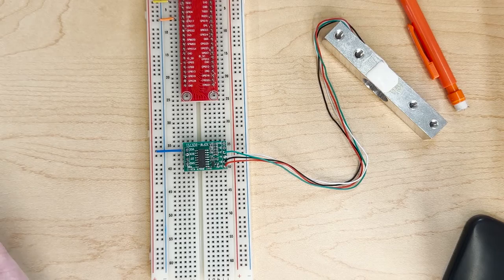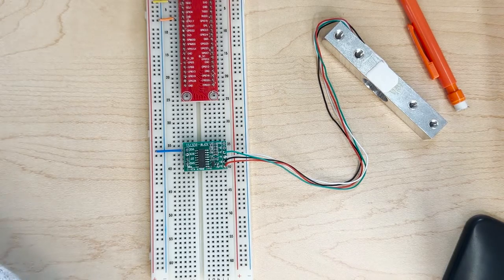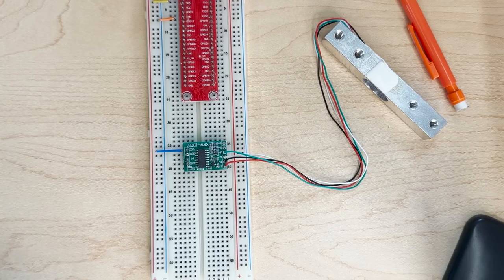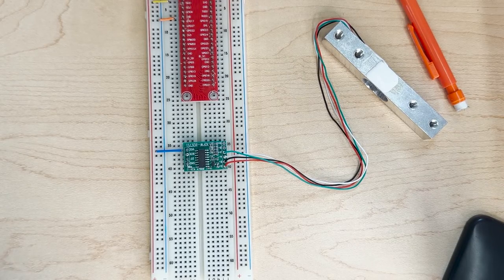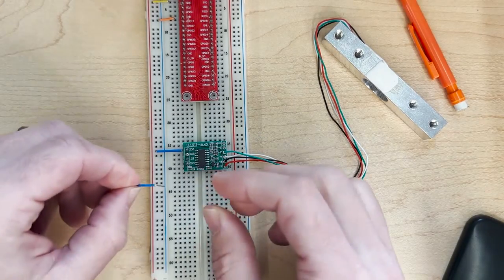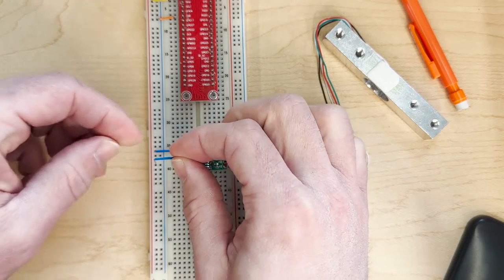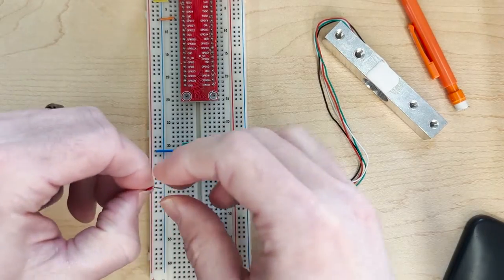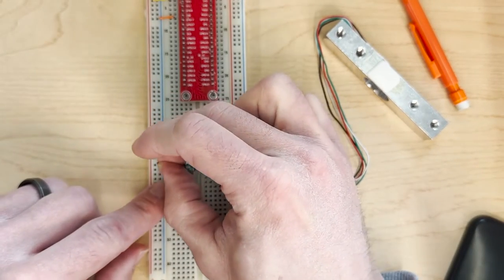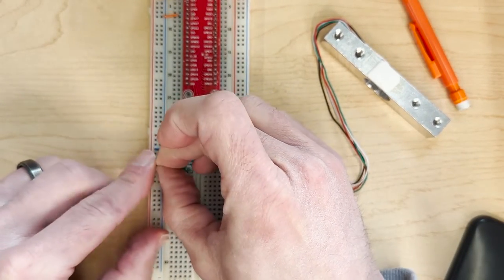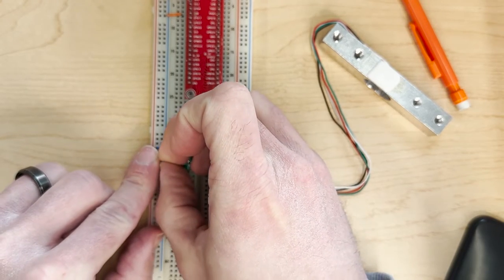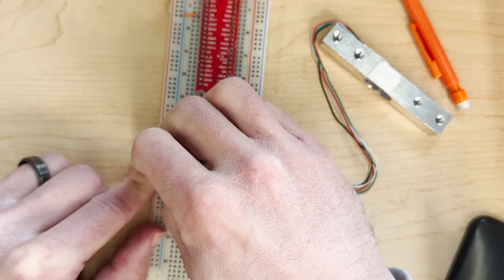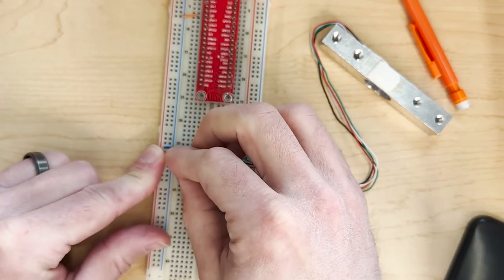Likewise, we can grab that ground as well. So let's attach that ground. We have our ground. Let me get a shorter wire and we can connect up our ground here. Okay, so there we have our three volts connected and our ground connected.